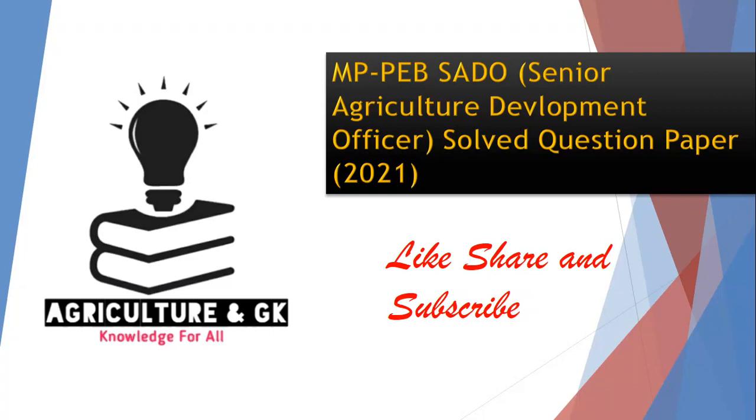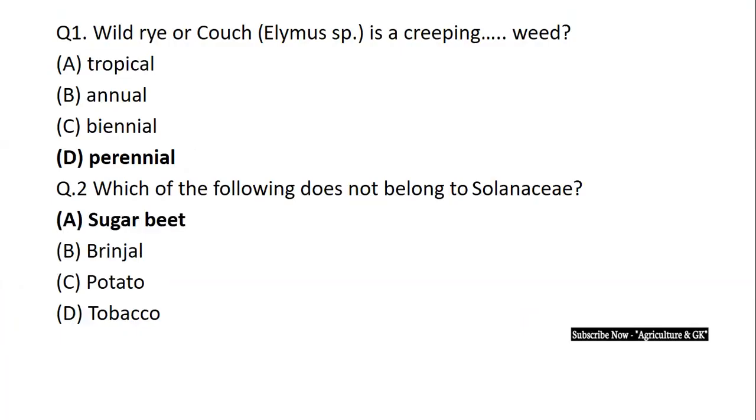Let's start with our first question. Wild rye or couch, Elymus species, is a creeping fill-in-the-blank weed. The correct answer is perennial weed. Next question: Which of the following does not belong to Solanaceae? The correct answer is sugar beet. Sugar beet family is Amaranthaceae.